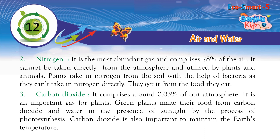Nitrogen is the most abundant gas and comprises 78% of the air. It cannot be taken directly from the atmosphere and utilized by plants and animals. Plants take in nitrogen from the soil with the help of bacteria, as they can't take in nitrogen directly. Animals get it from the food they eat. Carbon dioxide comprises around 0.03% of our atmosphere. It is an important gas for plants. Green plants make their food from carbon dioxide and water in the presence of sunlight by the process of photosynthesis. Carbon dioxide is also important to maintain the earth's temperature.